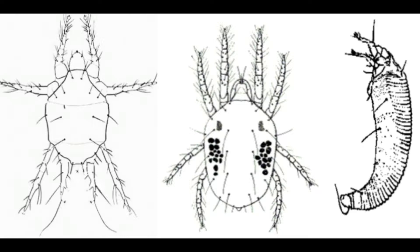The first group of mites is the Tarsanemids. Tarsanemids are the family that broad mite and cyclamen mite belong to, and they are called thread-footed mites, mainly because they have a lot of hairs and setae, but you can tell that on the southmost legs they have threads or hairs that are right next to their feet.